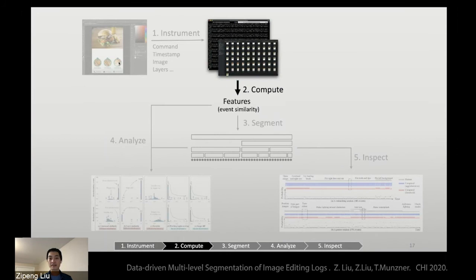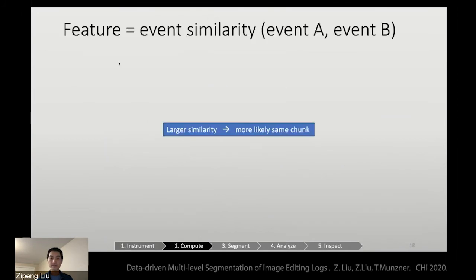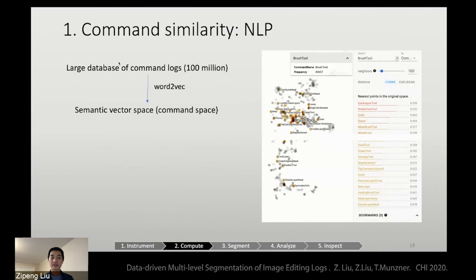After we collect this raw data, we compute the events into features. By feature, I actually mean event similarity between two events. The intuition being that if two events have larger similarity, it's more likely for them to be in the same chunk. I will introduce the different measures for event similarities.